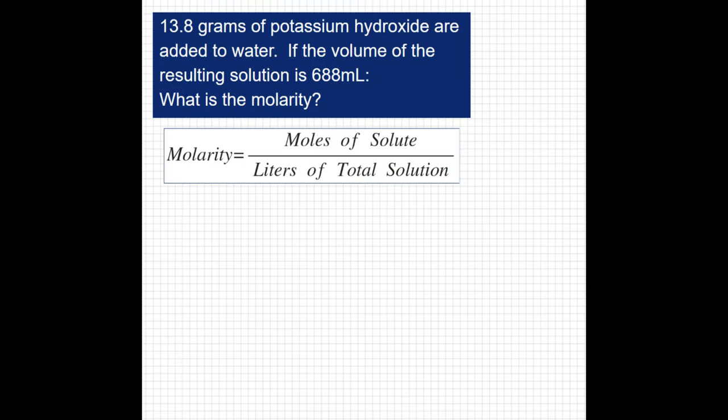To find molarity, we have to do moles of solute over liters of solution. Potassium hydroxide is my solute, so let's start there. I have 13.8 grams of potassium hydroxide, which is KOH. And if I want to do moles of solute, I need to convert that into moles.